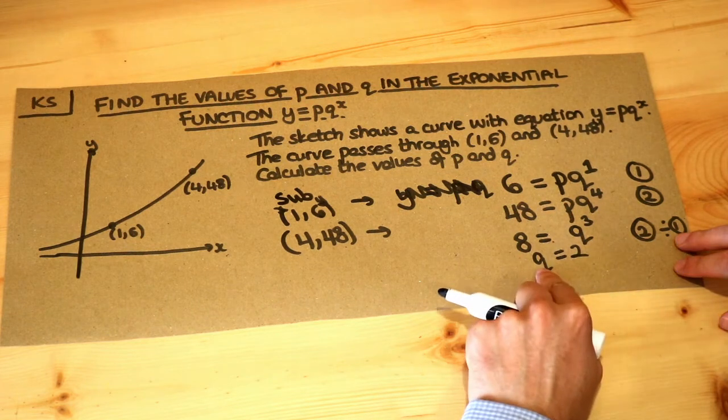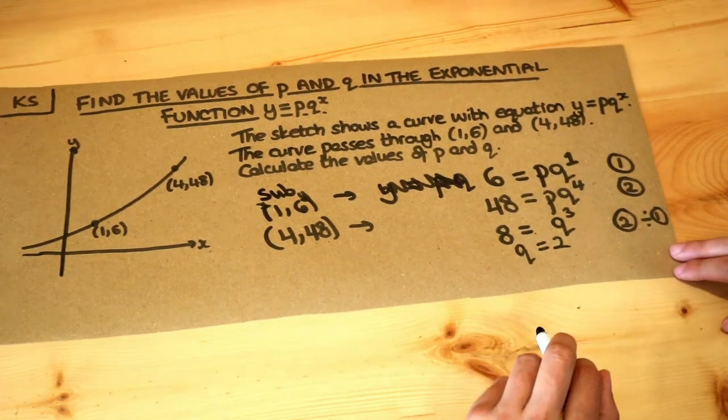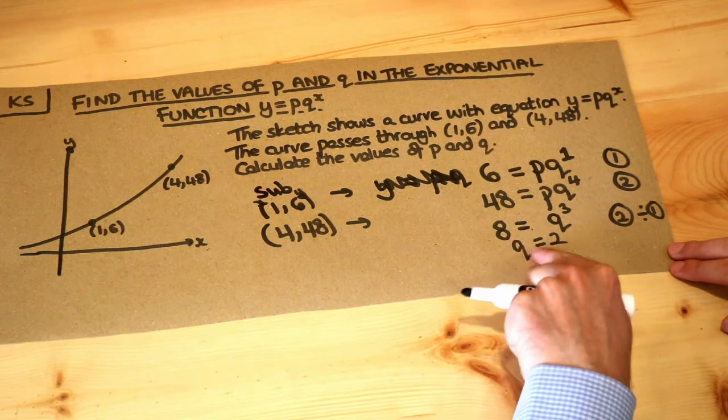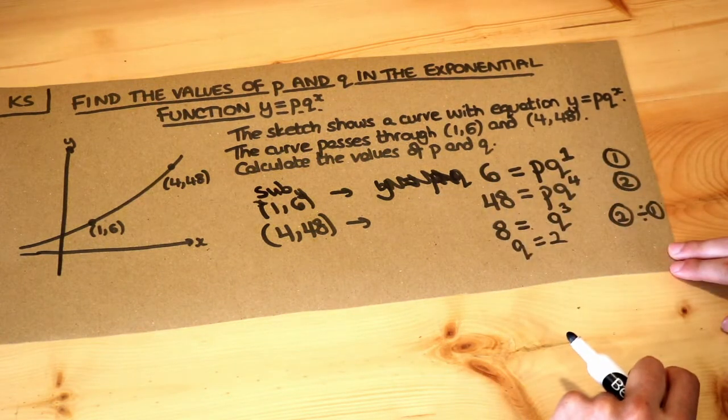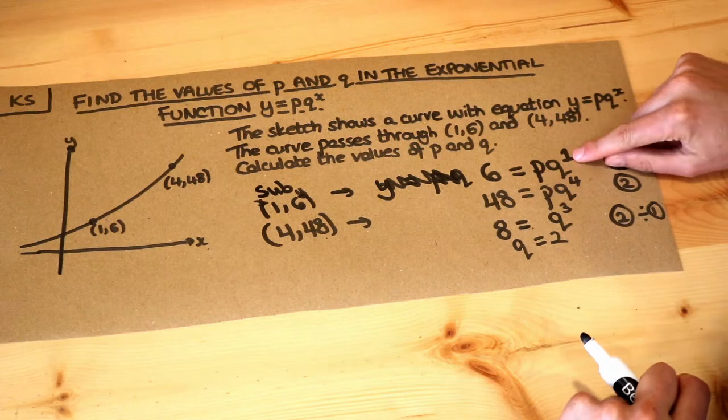So we've worked out the value of q, and then just like we would with normal simultaneous equations, we substitute that value we know back into one of the equations to work out what p is. Let's choose the first one because that's a simpler equation.